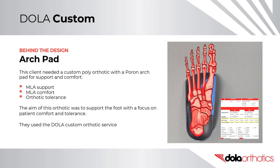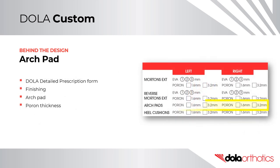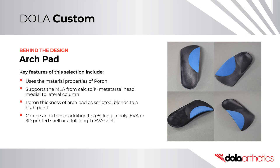Behind the Design – Arch Pad. This client needed a custom polypropylene orthotic with a pour-on arch pad for support and comfort. The aim was to support the foot with a focus on patient comfort and orthotic tolerance. They used the Dollar Custom Orthotic Service and selected the pour-on thickness for the arch pad from the finishing section of the Dollar detailed prescription form. Key features include the cushioning material properties of pour-on while supporting the MLA from the calc to the first metatarsal head under the medial column.